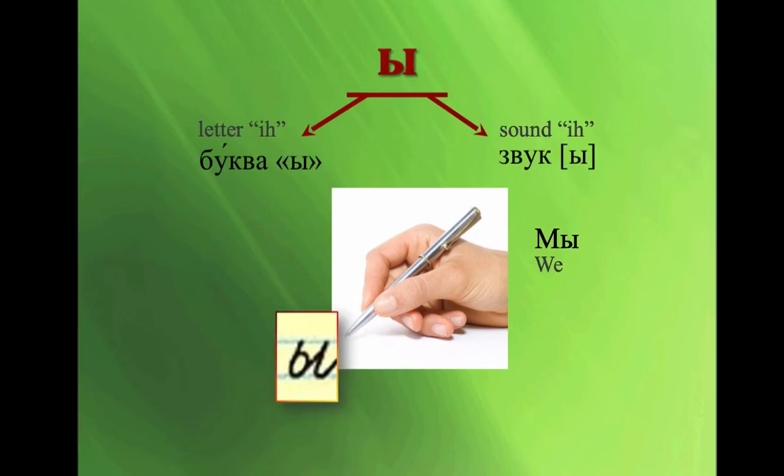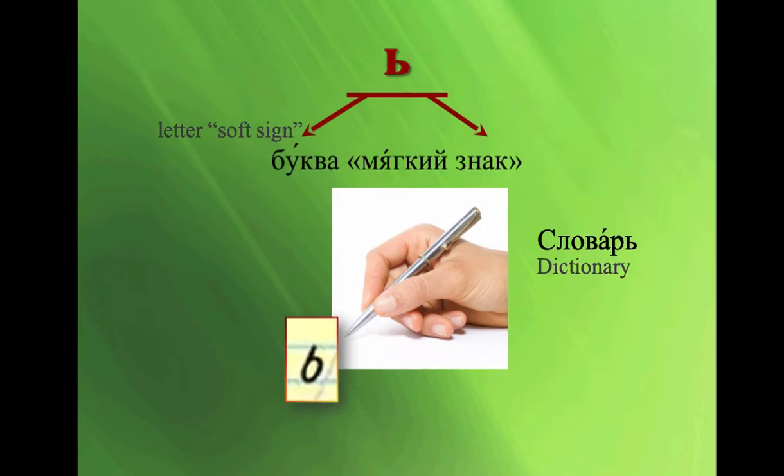Ы, Ы, Мы. Soft sign. Мягкизнак. Another letter without an uppercase and there's no word beginning with this letter either. And the purpose of the letter is to make the consonant before it sounds softer. Such as, словарь, dictionary.